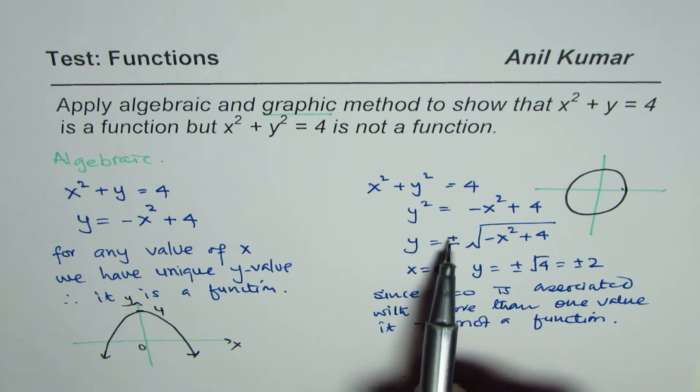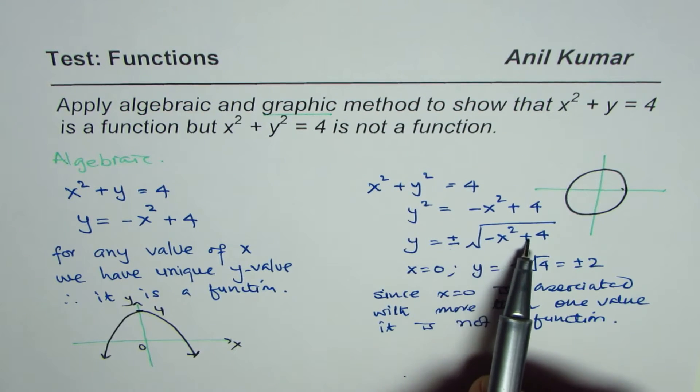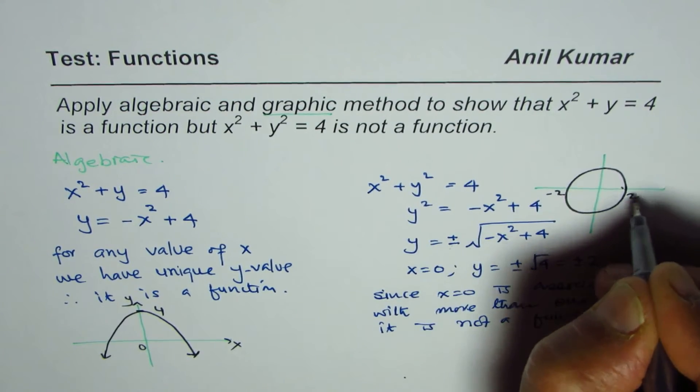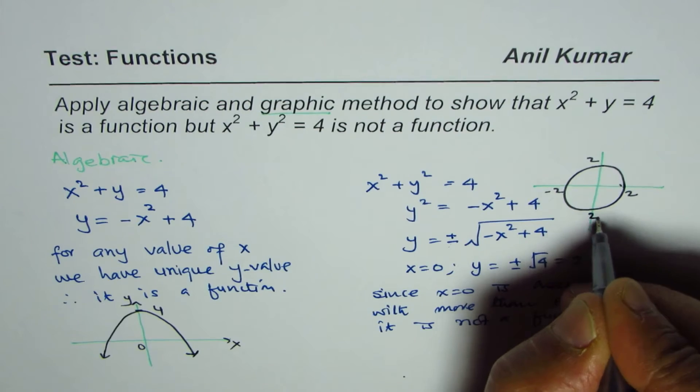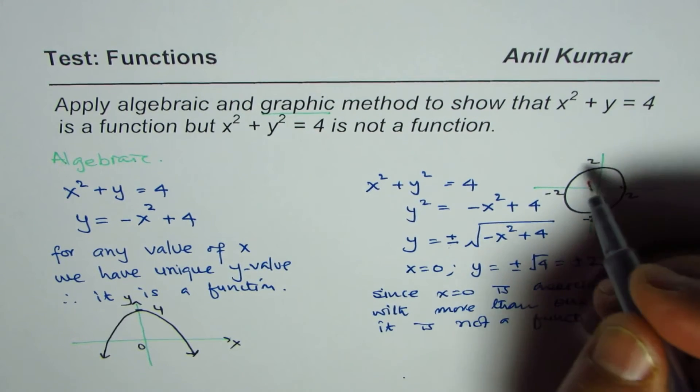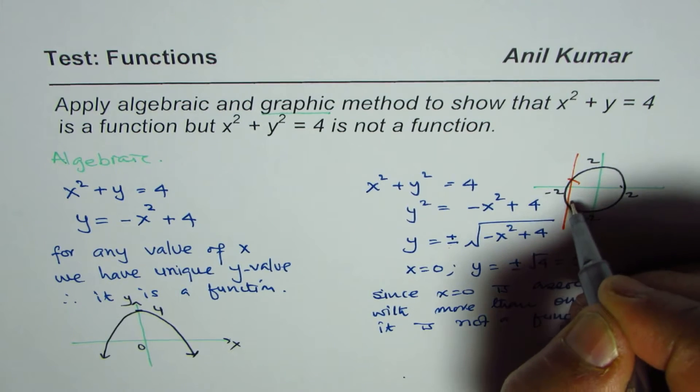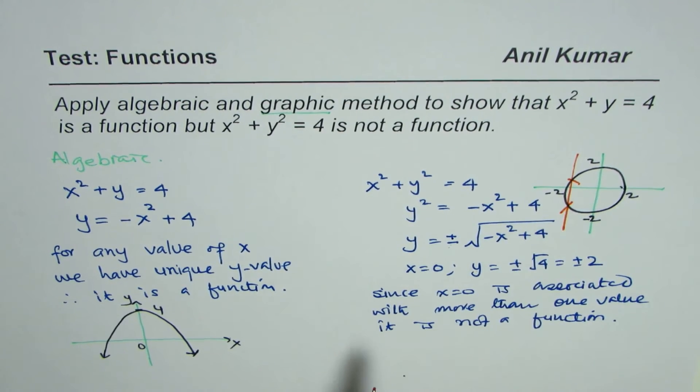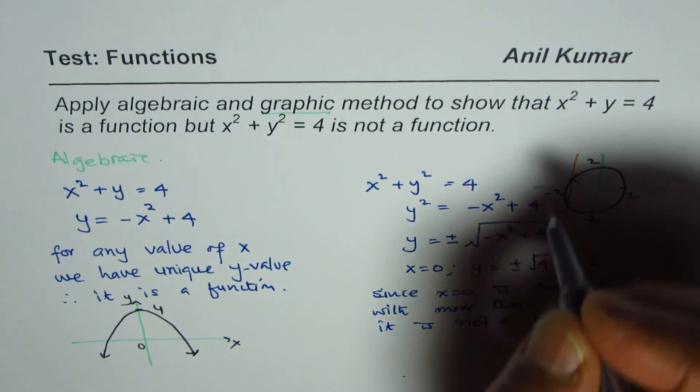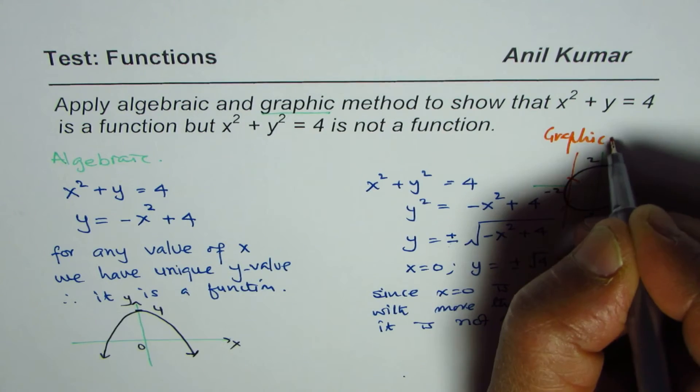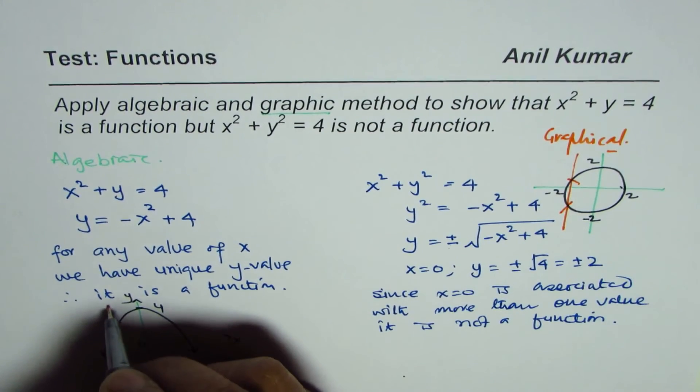Say y = ±√(-x² + 4), or it is a circle with the value of radius as 2. So here if I draw a vertical line it crosses at two points and therefore it is not a function.